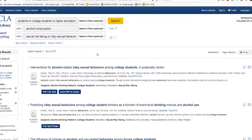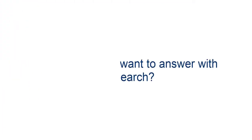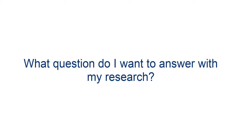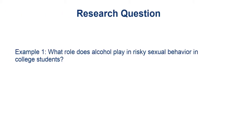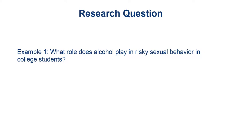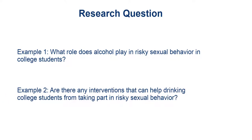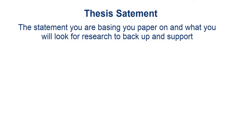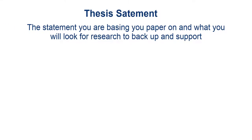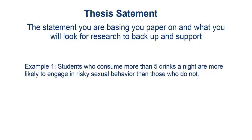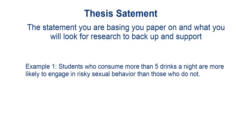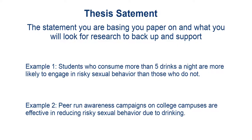If you do want to continue with college students drinking and risky sexual behavior, now ask yourself: what question do I want to answer with my research? Maybe it's something like, 'What role does alcohol play in risky sexual behavior in college students?' or 'Are there any interventions that can help drinking college students from taking part in risky sexual behavior?' Once you have your question, you can create your thesis statement — the statement you are basing your paper on and what you will look for research to back up and support. For example: 'Students who consume more than five drinks a night are more likely to engage in risky sexual behavior than those who do not,' or 'Peer-run awareness campaigns on college campuses are effective in reducing risky sexual behavior due to drinking.'